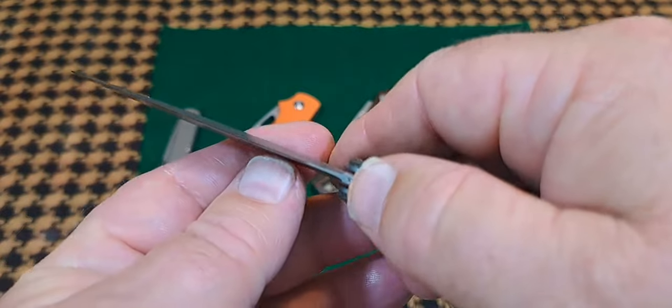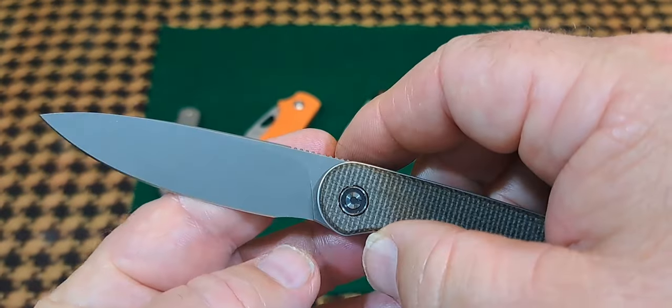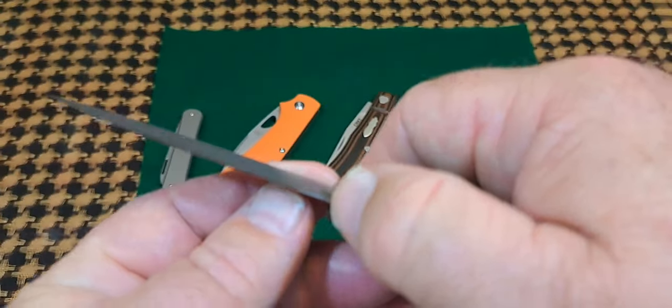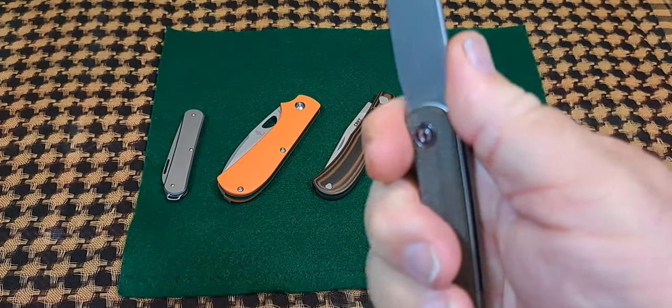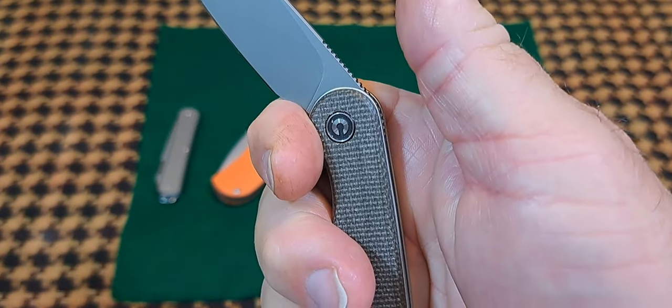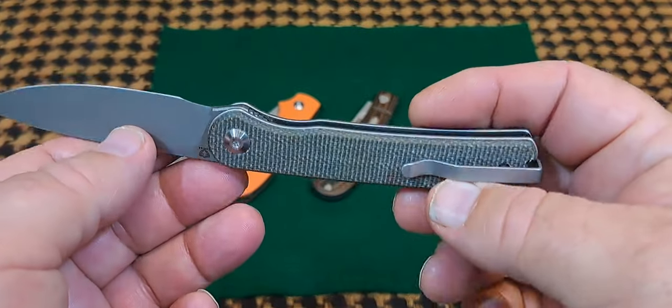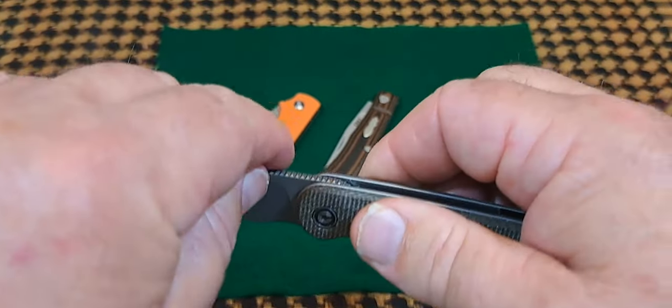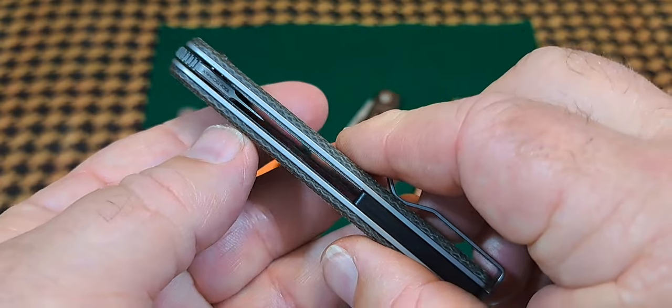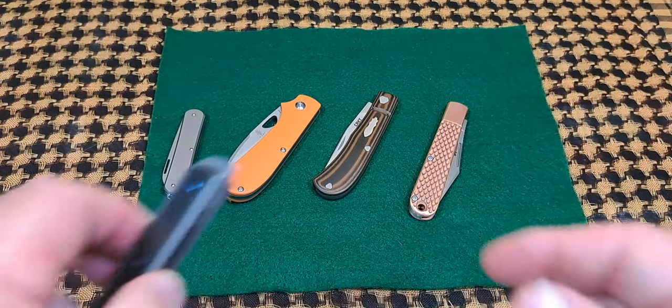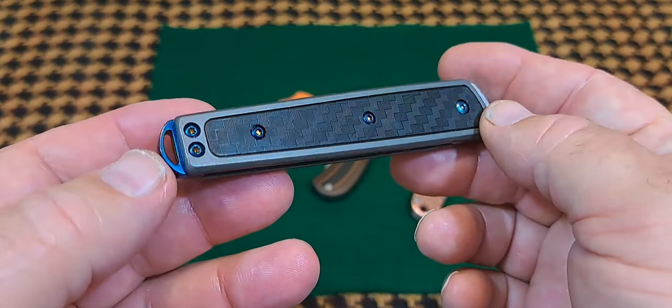But on this model, the Praxis from Civivi, it has a nice cutout here. Even if it pops down, you can see it's not going to cut you. But I would not consider this a modern slip joint because it's not a slip joint.